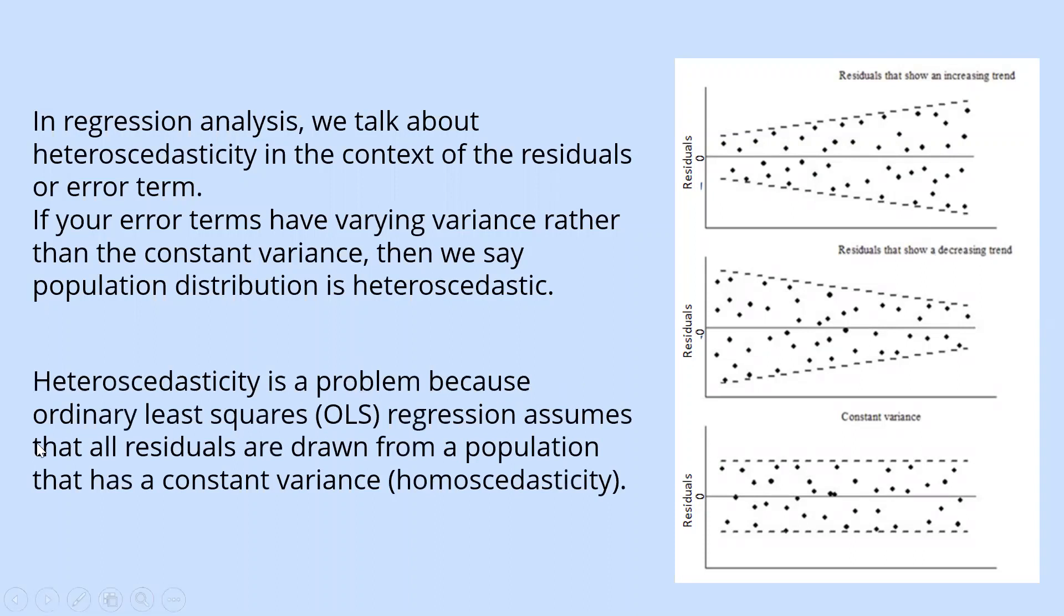Heteroscedasticity is a problem because ordinary least squares (OLS) regression assumes that all residuals are drawn from a population that has constant variance, which is also known as homoscedasticity. In the third graph, you can see the variance is constant.